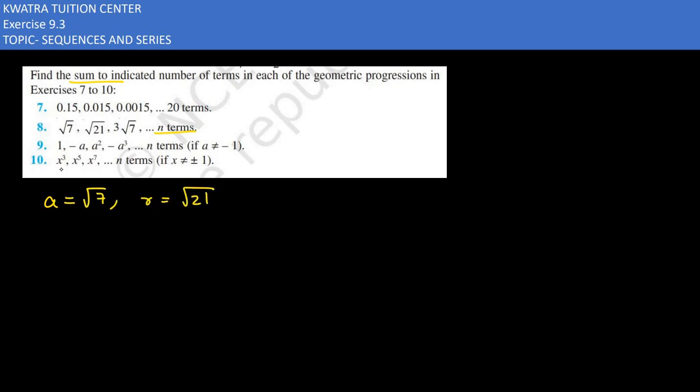For r, how can you write root 21 over root 7? Root 21 is 3 into 7, and root 7. 7 and 7 cancel and we have root 3. Now we have to remove sn value. A then r, you can see root 3, root 3. What is r? r is greater than 1, so you have value rn minus 1, r minus 1.